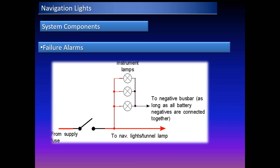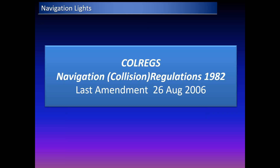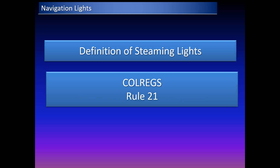You also have failure alarms — if something goes wrong with the navigation lights, you are automatically notified through the failure alarms on the control panel. Finally, you have the bulb and housing, which are designed to specific requirements so that these sidelights and masthead lights are only visible within a certain sector of visibility, which we'll discuss when we talk about chromaticity.